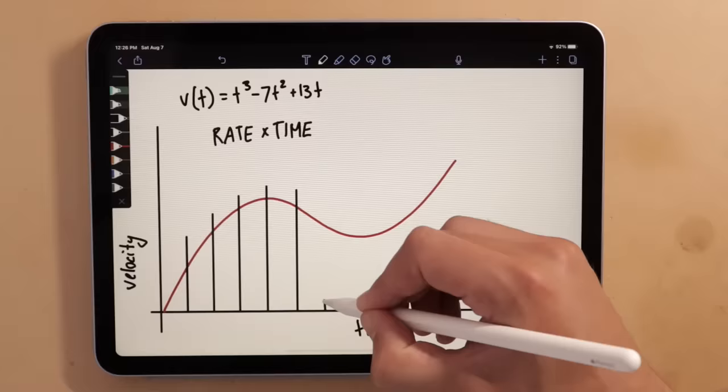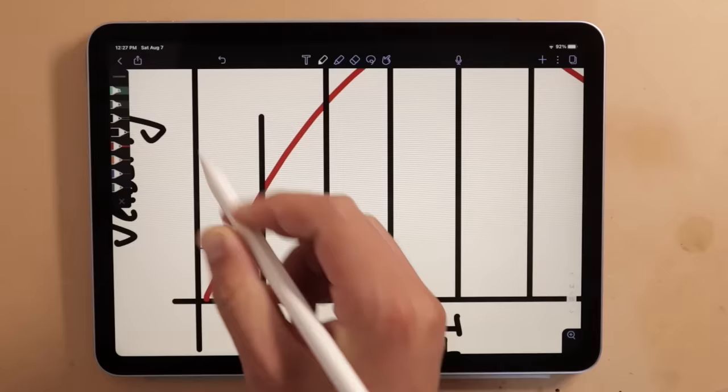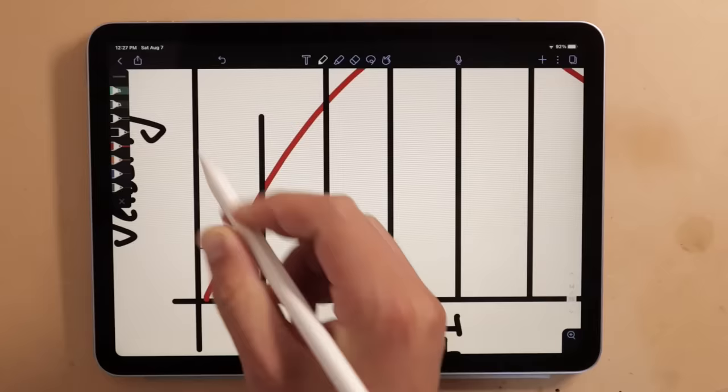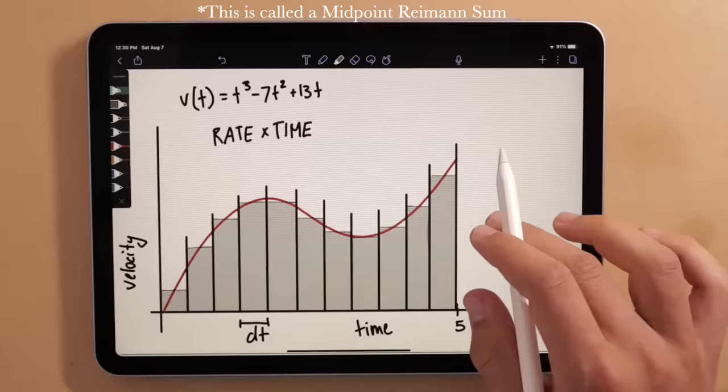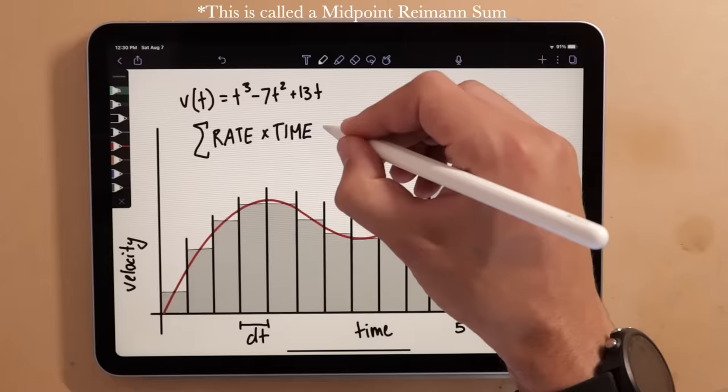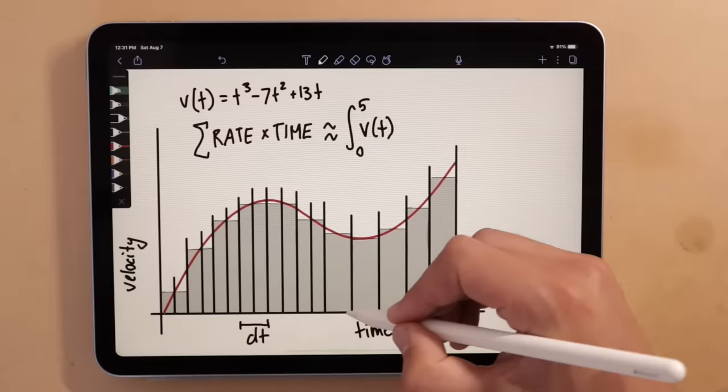Well, imagine we cut this graph into a bunch of thin slivers of size dt. With each sliver, let's take the value in the middle of the interval and do an approximate rate times time calculation with that value. If we do this for all of the sections and add up all the results, this will give us a pretty good estimate for the area. Now this estimate would be better if we used a smaller dt. But in order for it to be perfect, we would have to do this calculation with an infinitely small dt. This is essentially summing up an infinite number of rate times time calculations for infinitely small sections of this graph.